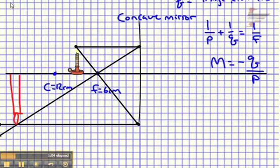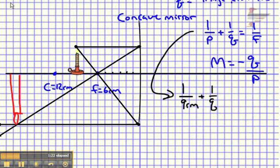Alright, so let's do our math calculations and see if it seems to agree with that drawing. So coming here, we can take our object location, our object is 1, 2, 3, 4, 5, 6, 7, 8, 9 centimeters away, so we'll have 1 over 9 centimeters plus 1 over Q is equal to 1 over our focal length, and in this case our focal length is 6 centimeters.